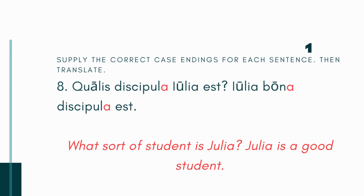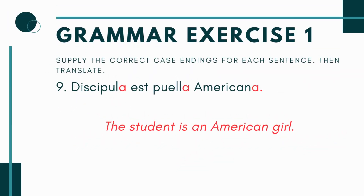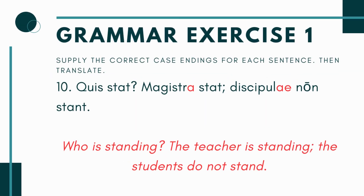Number 9: 'discipula___ est puella___ americana___.' We don't know singular or plural until we check the verb, which is est. Since est means 'he, she, or it is,' the subject needs to be singular: discipula. So you're saying: discipula est puella americana — the student is an American girl. They're all singular because we're talking about one student, and my verb est is a singular verb.